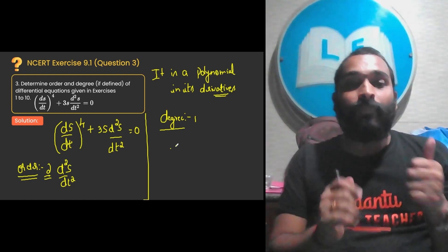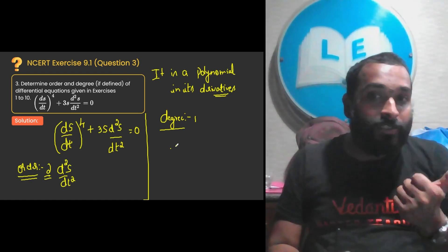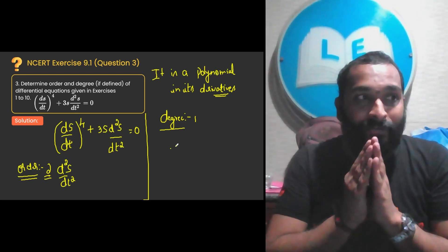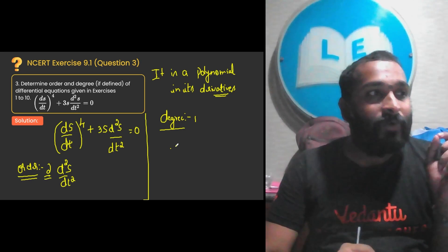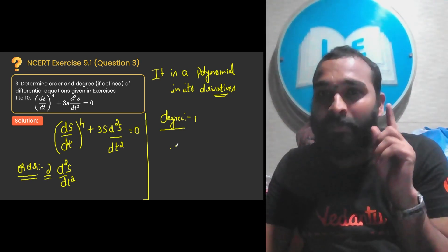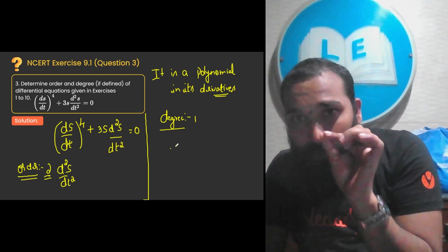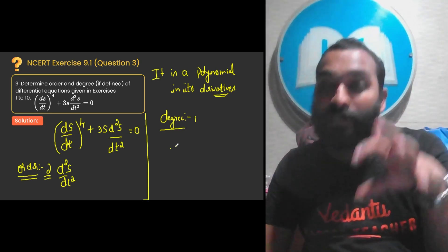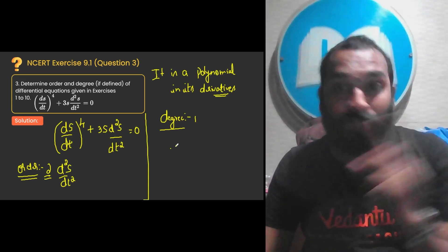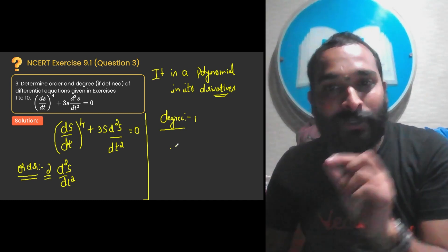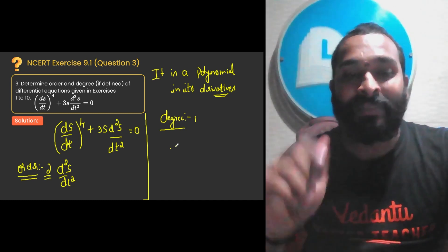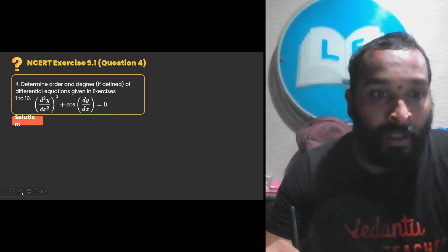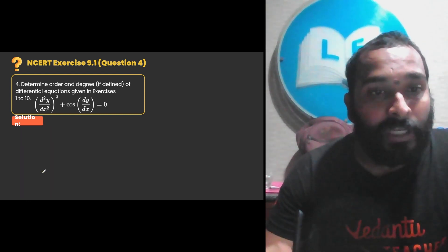Whenever you get order and degree, please understand: if it is a polynomial function in its derivative, then only degree is defined. Otherwise, if it is a function of some other function, then it is not defined. Here, degree is also defined, order is also defined. In this question, we are supposed to find degree and order of the given differential equation. First, we find what is the highest derivative.